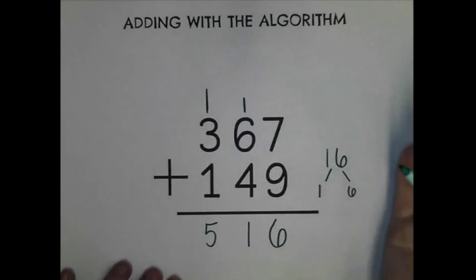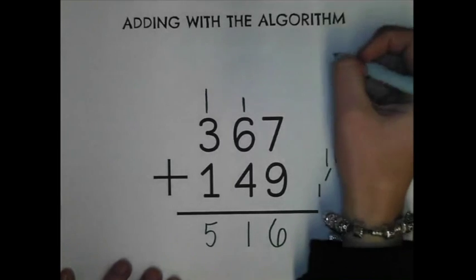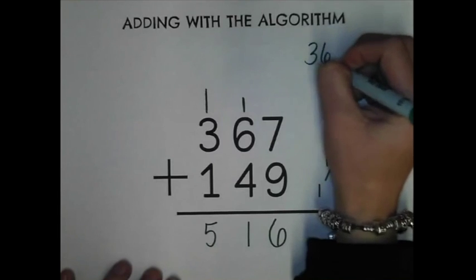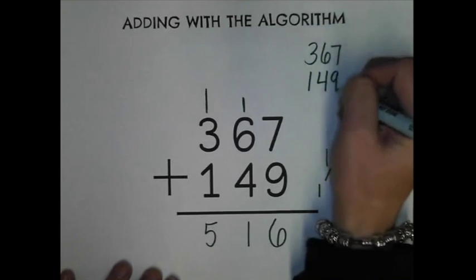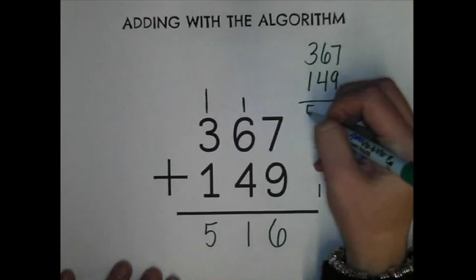For example, one plus one equals eighteen is not a reasonable answer. I'm going to write my question up here one more time and the answer that I got.